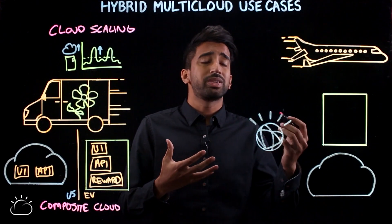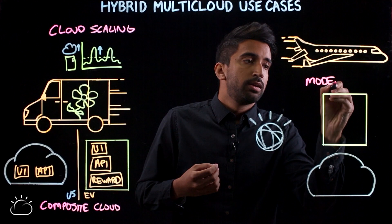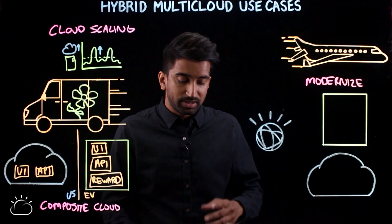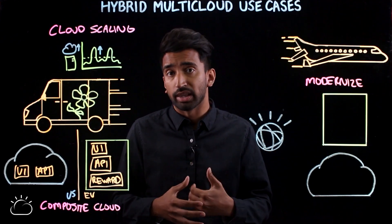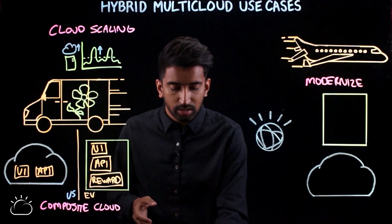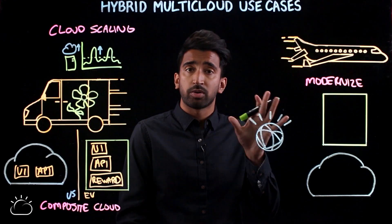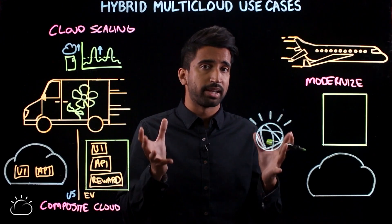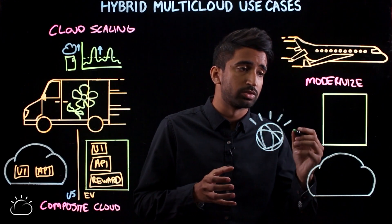We can start with an example of modernization. In the past, reservation systems may have been difficult to work with, or you might have had to call in, but almost all airline companies now have a mobile application. We've found that in general — not just in the travel industry — about 80% of all enterprise applications are actually still on-prem, and that's likely the case in this industry as well.